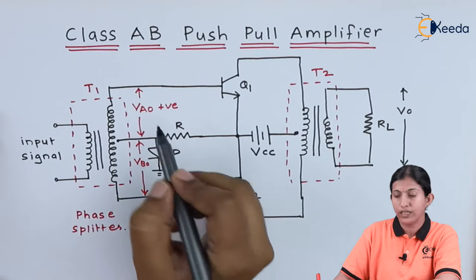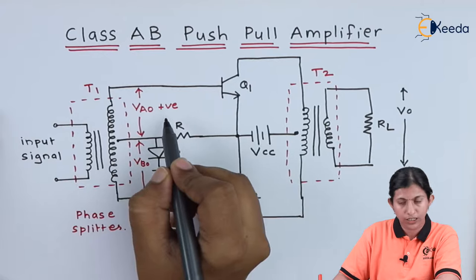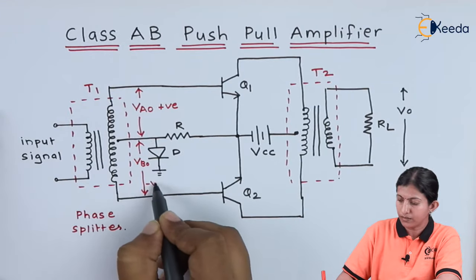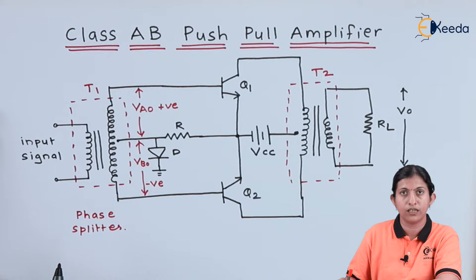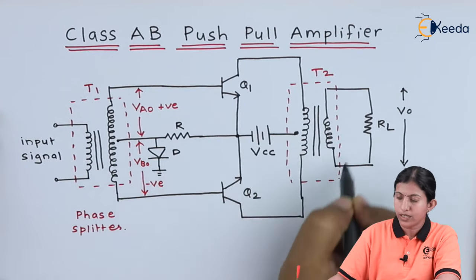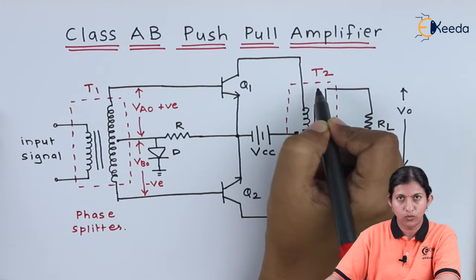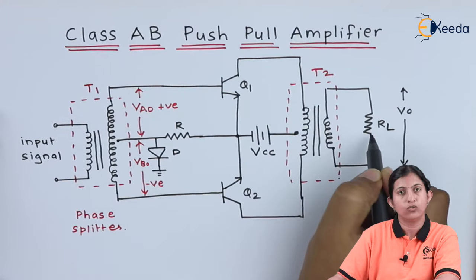That means when the VAO voltage is positive, VBO voltage will be negative. The output transformer is T2, which is coupled to the load resistor.